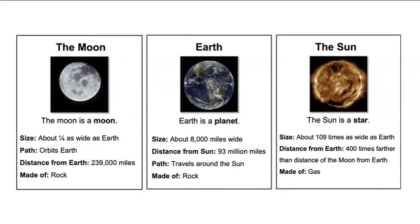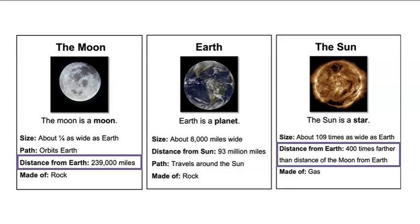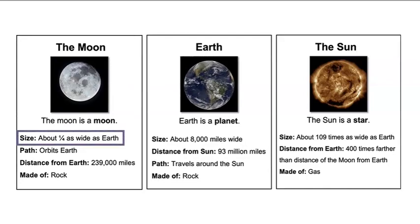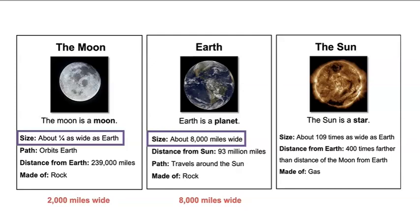Let's think about all this information. Where is the moon located? Well, we know that the moon is about 239,000 miles from Earth, and we know that the moon is much closer to Earth than the sun is. The sun is 400 times farther away from Earth than the moon is. How does the size of the moon compare to the size of Earth? The moon is smaller than Earth — about one-fourth as wide. So if Earth is about 8,000 miles wide, the moon is about 2,000 miles wide, because 2,000 is one-fourth of 8,000.